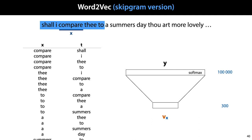If training is successful, then the output distribution matches what we see in the data, and we know that our embedding vectors now contain the information about which words are likely to appear in their context. The embedding vector for the word 'compare' should now contain the information that words like 'the' and 'to' are likely to appear next to it.